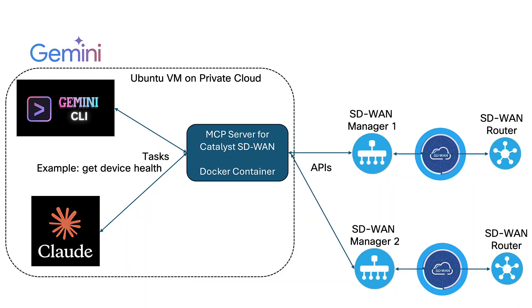Let's summarize. AI was able to generate an MCP server for SD-WAN in less than 10 minutes. All we had to do was write a prompt in a few sentences, provide API documentation for SD-WAN and basic access information. Then we followed AI instructions for the Docker image installation and configured private AI to use our new MCP server.